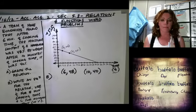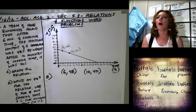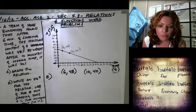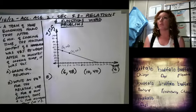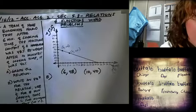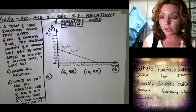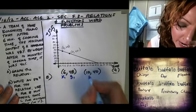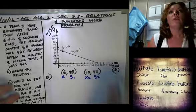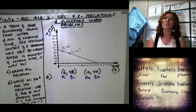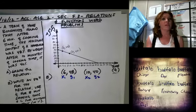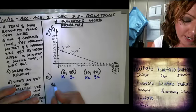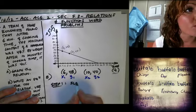Next step: write an equation for the relation. Use t for the number of minutes of cooking time and c for the moisture content. We're going to start with x and y and then come back and substitute c and t. We have x₁, y₁ and x₂, y₂. We're going to find the slope. Step one is the slope — what is the equation for slope?